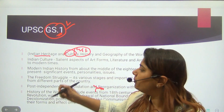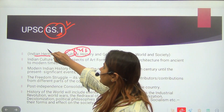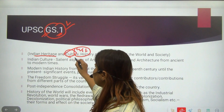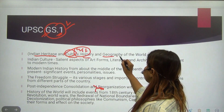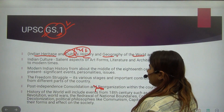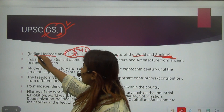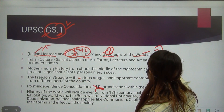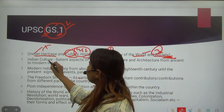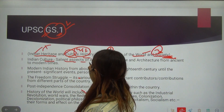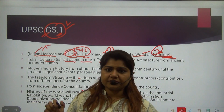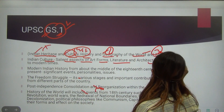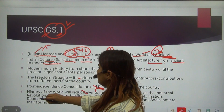Now we will discuss GS1 — Indian Heritage and Culture, History and Geography of the World, and Society. These three topics are one, two, and three. Under Indian Culture, we will discuss salient aspects of art forms, literature, and architecture from ancient to modern times.